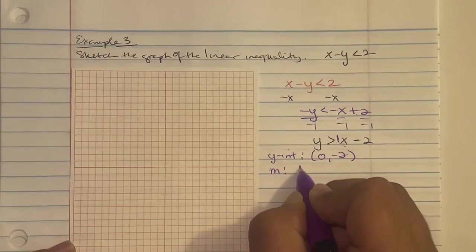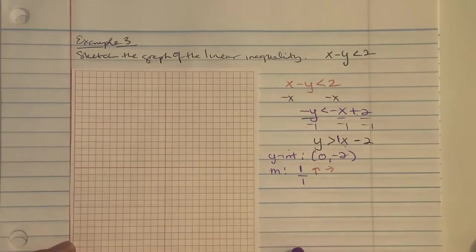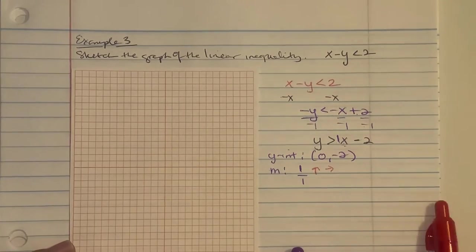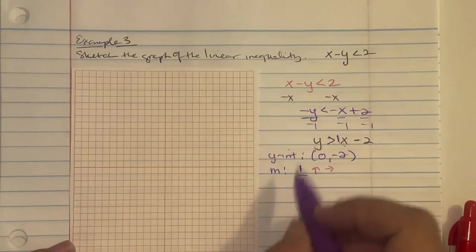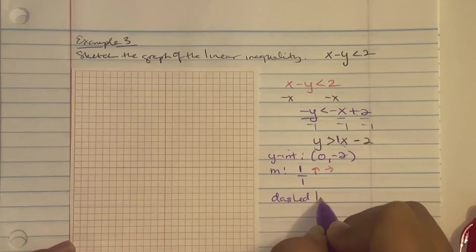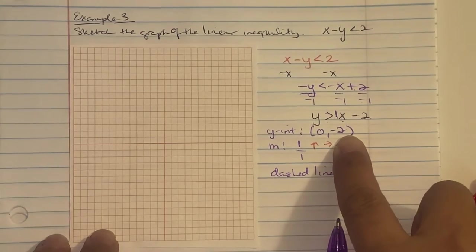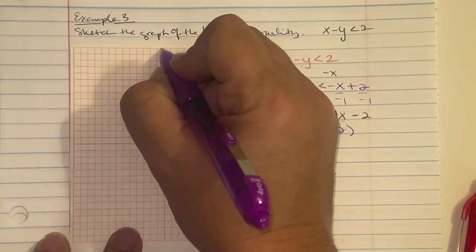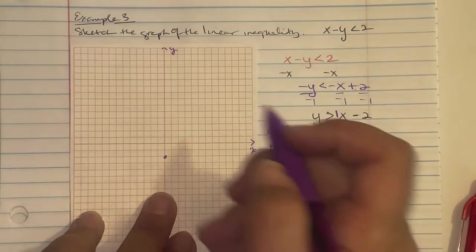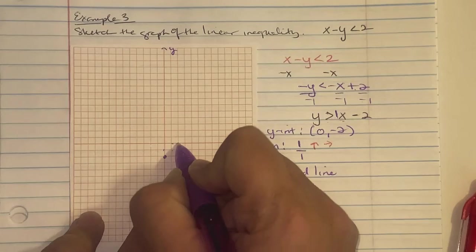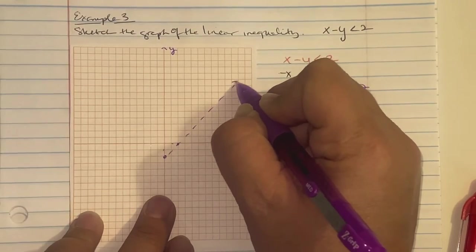With slope 1 over 1, we rise 1 and go right 1. Since the inequality is greater than only — no line underneath — we use a dashed line. We have enough information to graph. Starting at the Y-intercept of negative 2, we plot a point on the Y-axis. The slope says rise 1, right 1 — so we go up 1 to the right 1, up 1 to the right 1, reaching the X-intercept. We draw a dashed line through those points.